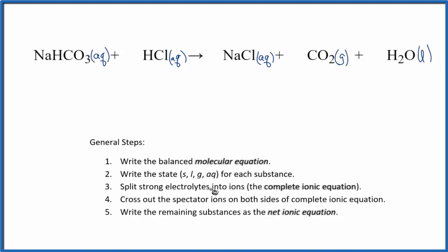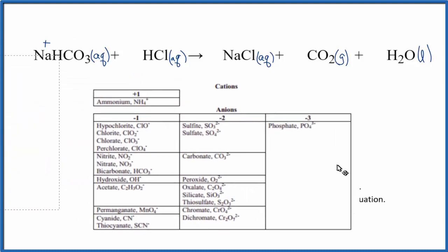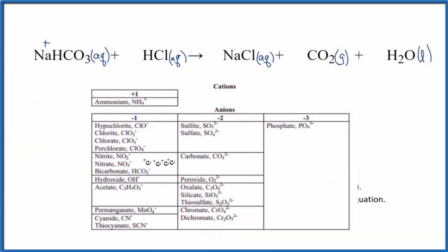Next, we can split the strong electrolytes apart into their ions. So we have sodium, that's in group one on the periodic table. That'll have a one-plus charge. And this hydrogen carbonate, this bicarbonate ion, we could look up on a table of common polyatomic ions, and we could see that it's right here, the bicarbonate, HCO3 minus.